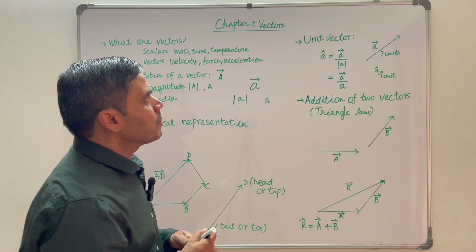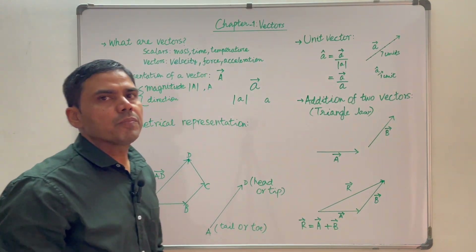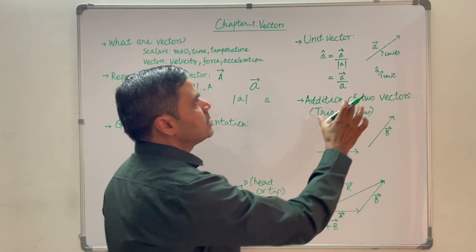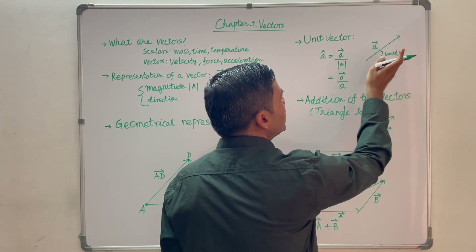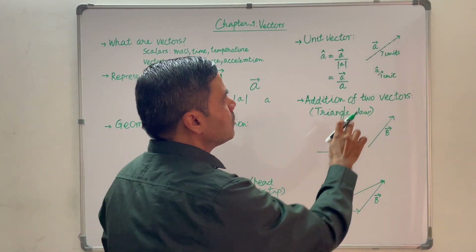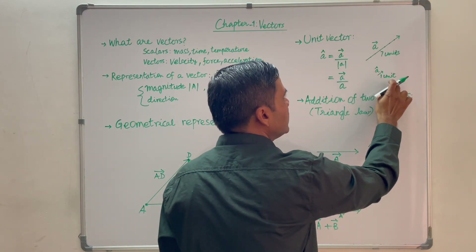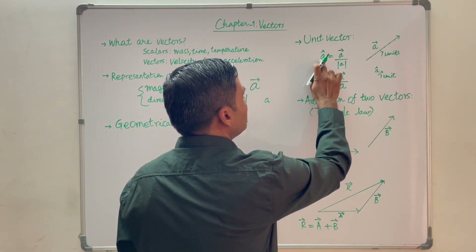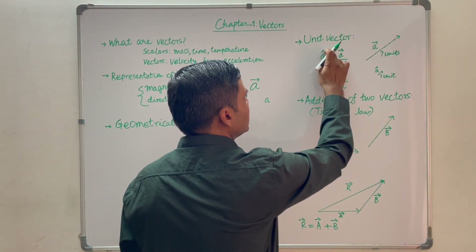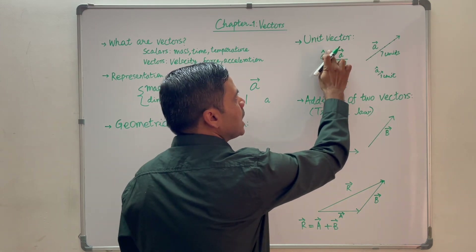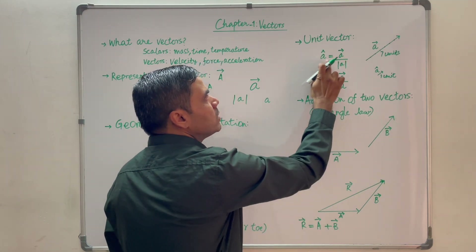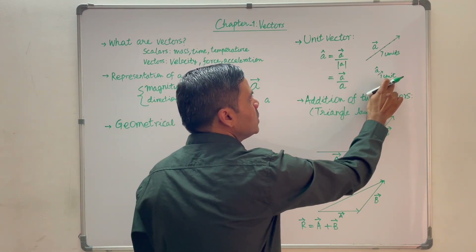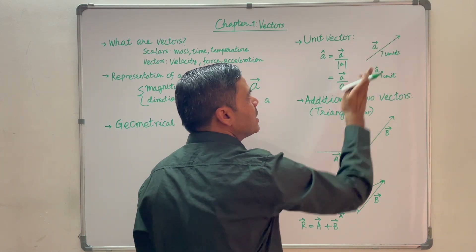Let us see the unit vector. A unit vector is defined as the ratio of a vector to its magnitude. Suppose A is the vector which is 7 units in magnitude. Then A-unit will be 7 divided by 7, that is 1 unit, and the direction will remain the same. It is represented by the symbol A-hat, which is read as cap, hat, or caret. So A-hat equals vector A divided by mod A. It will be 1 unit in magnitude and the direction will remain the same as the original vector.